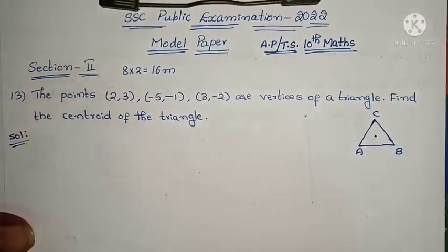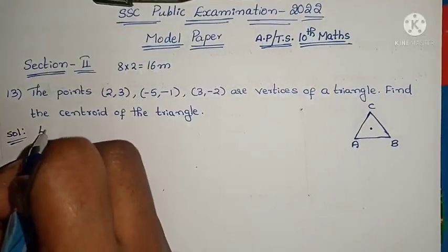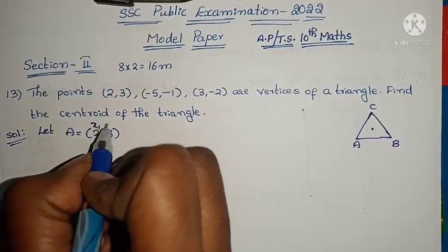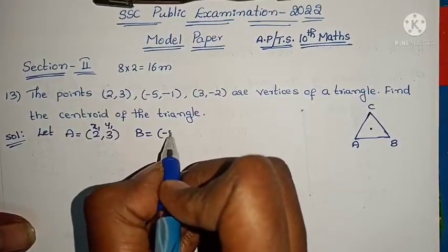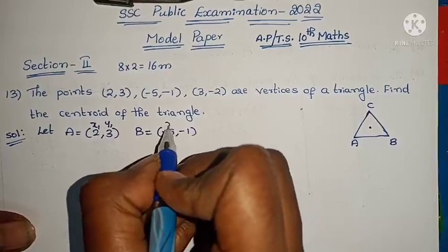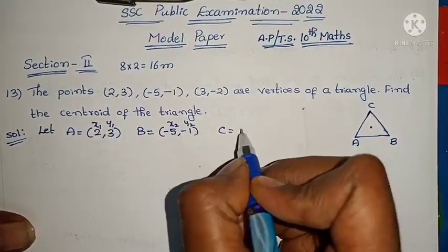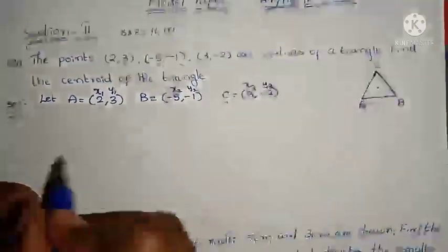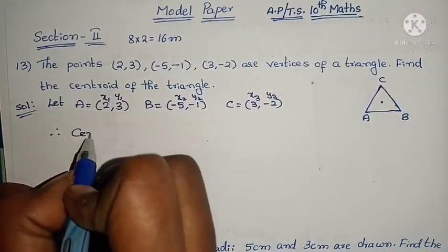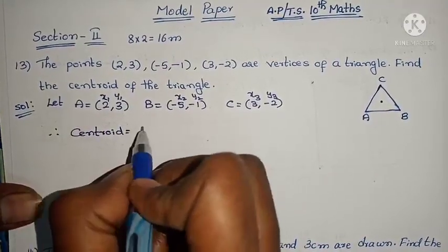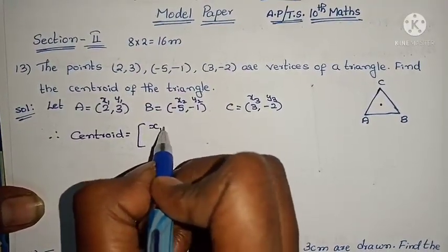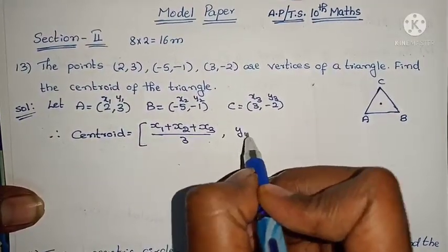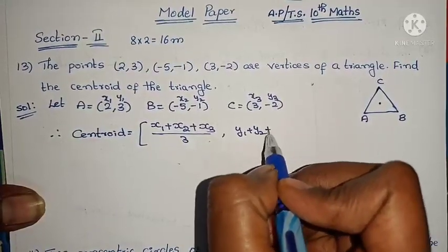We have already learned this formula, so let us use it. Let A = (2, 3), so x1 = 2, y1 = 3. B = (−5, −1), so x2 = −5, y2 = −1. C = (3, −2), so x3 = 3, y3 = −2. Therefore, centroid equals the formula.